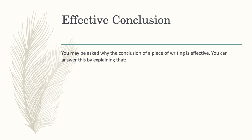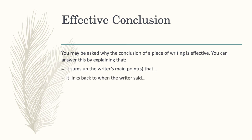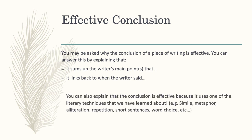Lastly, on to effective conclusions. You might be asked why the ending or conclusion of a piece of writing is effective. You can answer these questions by saying, for example, that the conclusion summarises the writer's main points, or that it links back to something important the writer said earlier in the text, or that the conclusion is effective because it uses one of the techniques we've learned about — such as similes, metaphors, alliteration, repetition, short sentences, or word choice. All of these things you've learned about in class — you may notice one is used in the conclusion, making it effective. Either approach is fine.